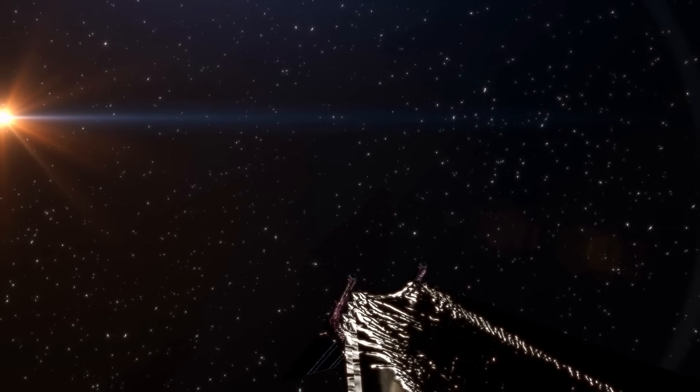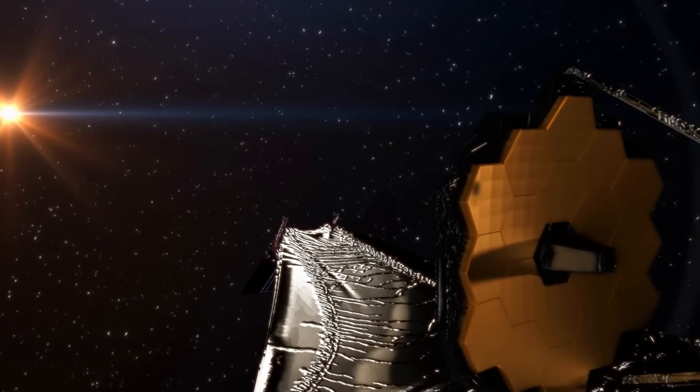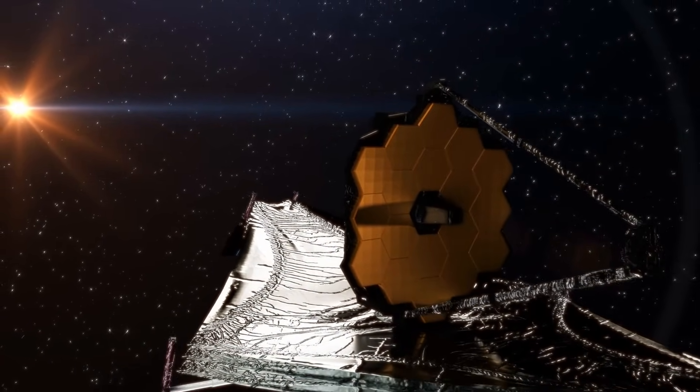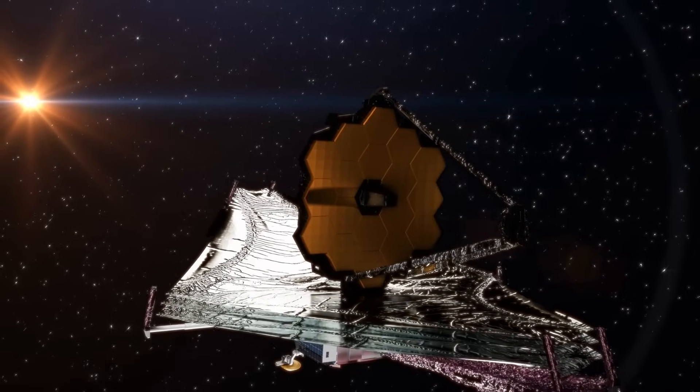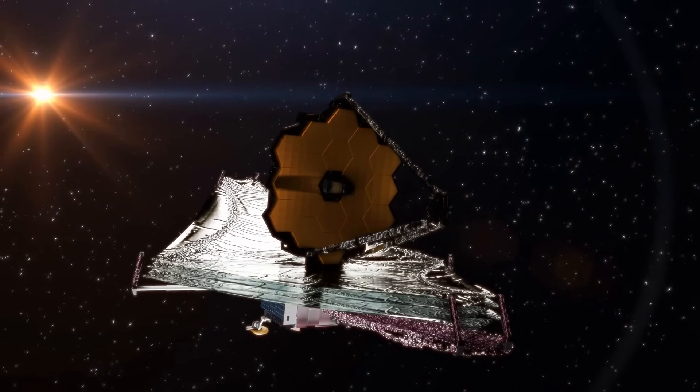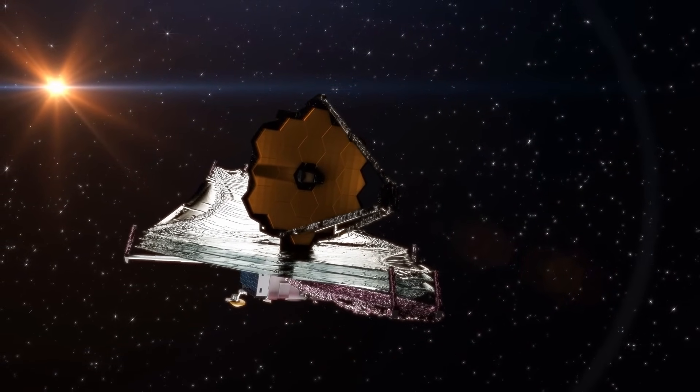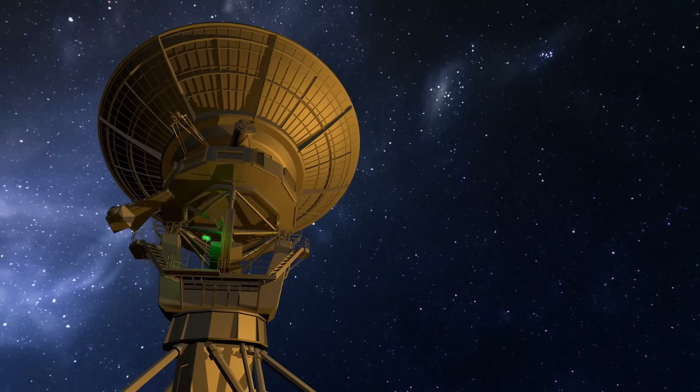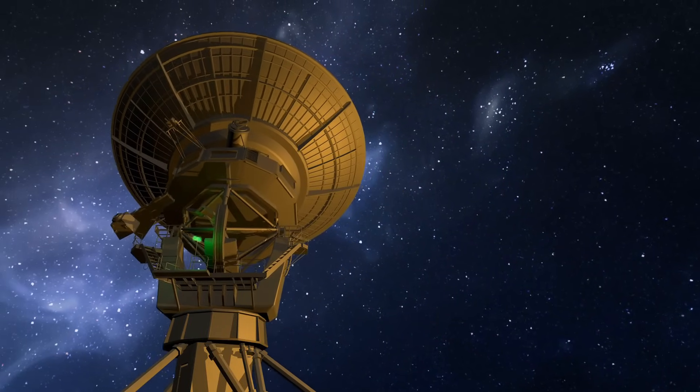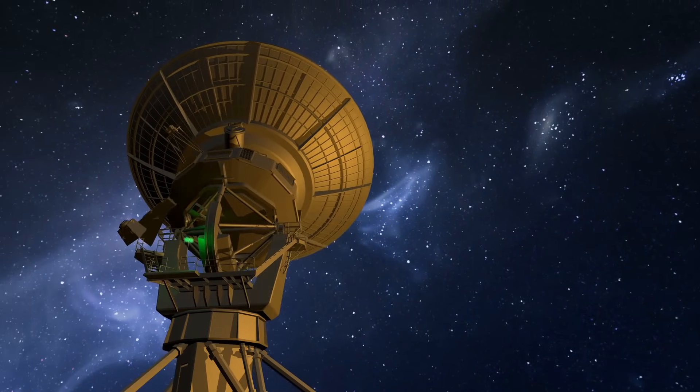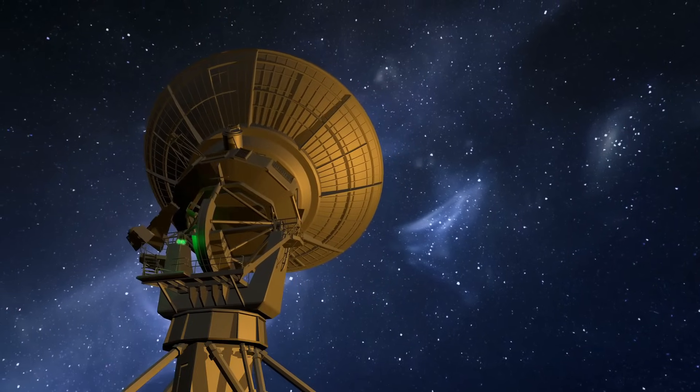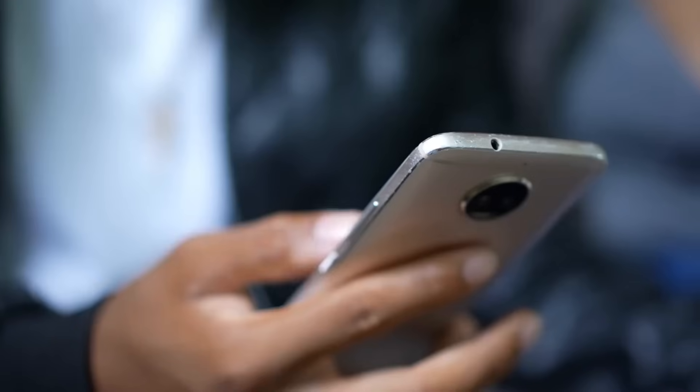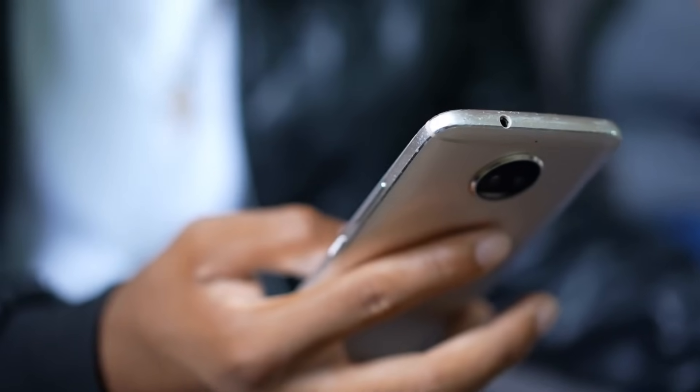For example, the James Webb Space Telescope's ability to find out what chemicals are in the atmospheres of faraway worlds could help find those that are not only good for life, but also likely to have industrial activity. On the other hand, projects like Breakthrough Listen use radio telescopes to look through the sky for signs that don't fit with the background noise of space. This is like calling the stars on the phone.